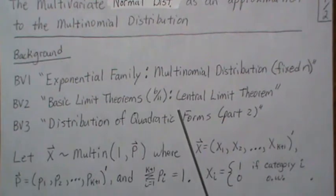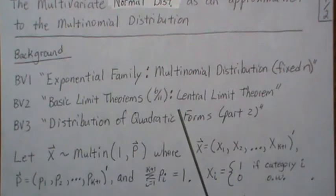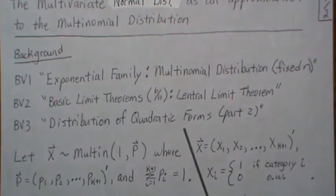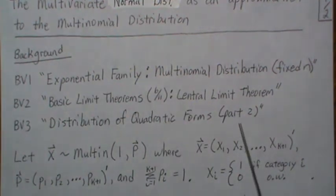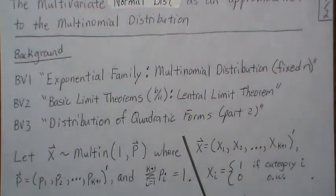BV2 is the central limit theorem, specifically the univariate central limit theorem, and we also look at the binomial distribution and what it limits to according to the central limit theorem. In BV3 we look at quadratic forms, part 2 specifically, and that's where the random variable is a multinomial distribution but the covariance matrix is singular — it's a positive semi-definite matrix.